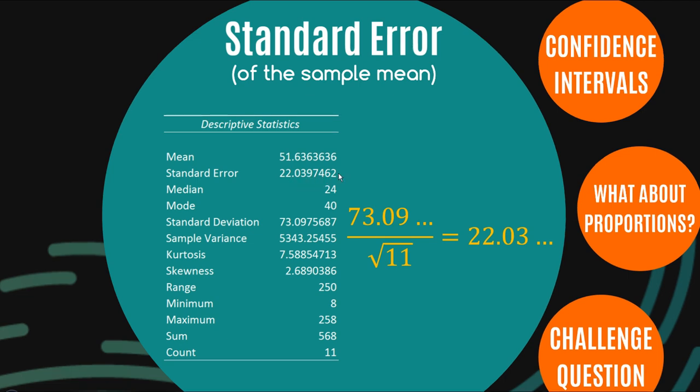So we can calculate it, but what is it, and why on earth do we divide by the square root of n?